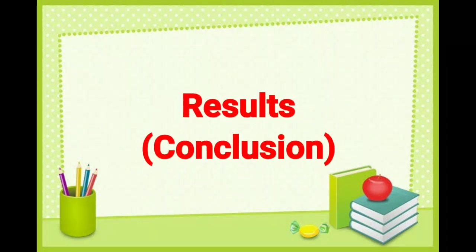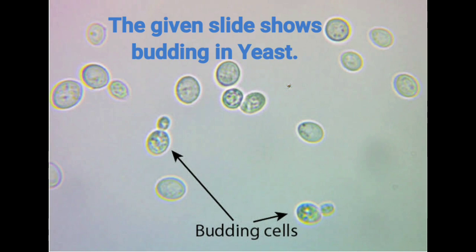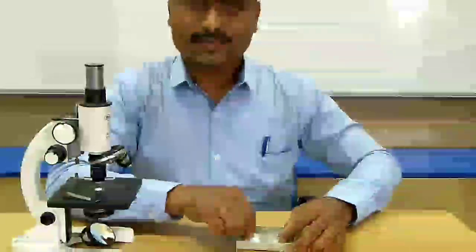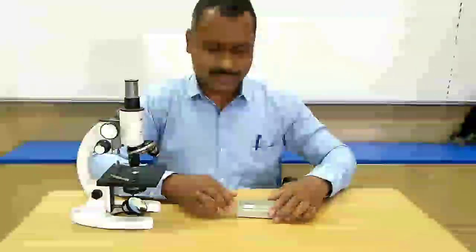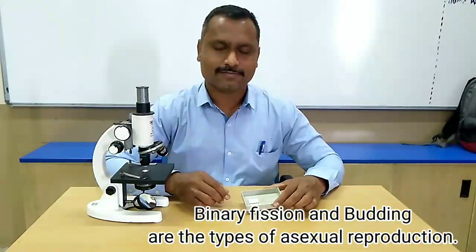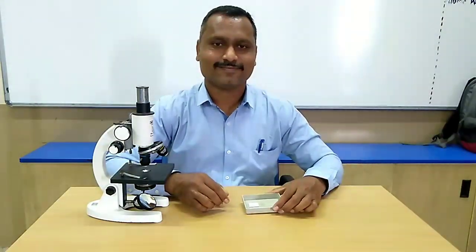Results or conclusion: The given slide shows budding in yeast. Binary fission and budding are both asexual methods of reproduction. Thank you.